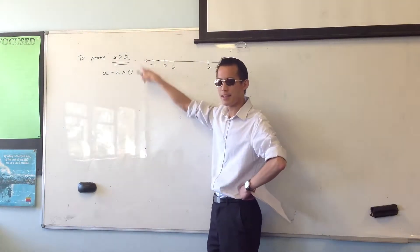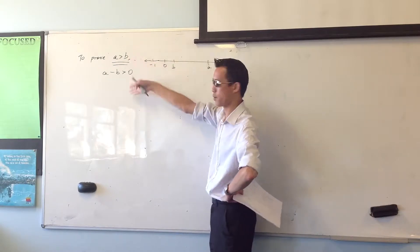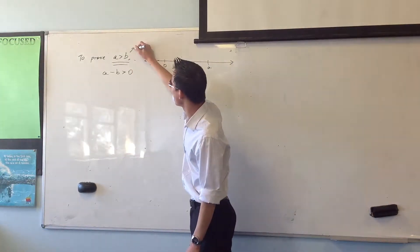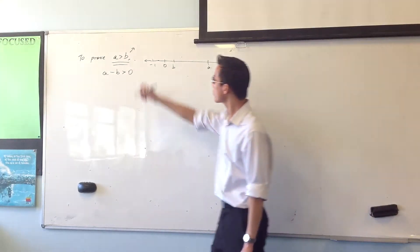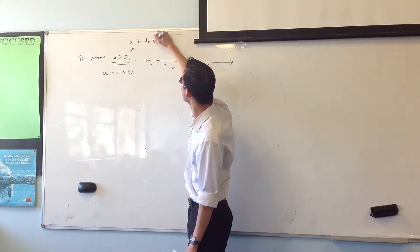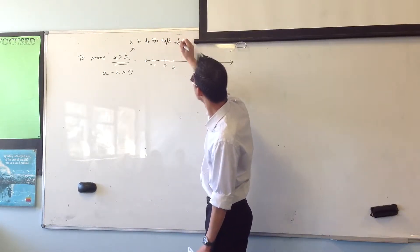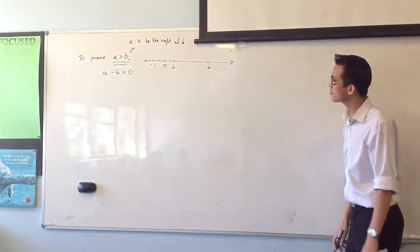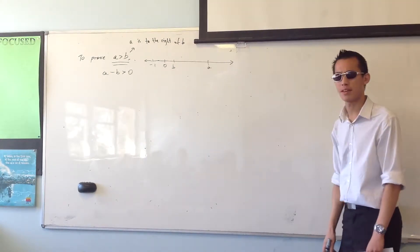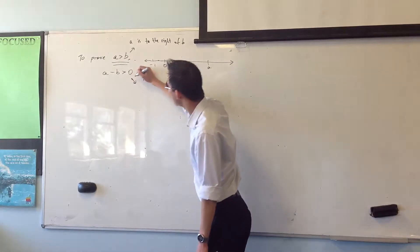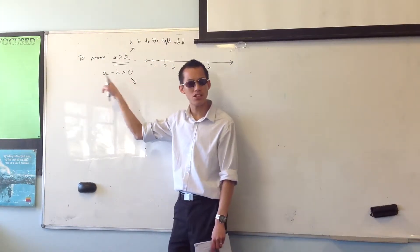So, to rephrase this, instead of saying it algebraically, these are both algebraic statements which are totally equivalent. To prove that, I'm going to say it geometrically, that a is to the right of b. Okay, a is to the right of b. Does that make sense? How would you word this geometrically?